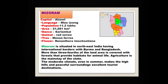Mizoram — capital Aizawl. Mizoram is situated in northeast India having international borders with Burma and Bangladesh. More than three-fourths of the land area is covered with forests that provide habitats for animal life. Agriculture is the mainstay of the state. The moderate climate, even in summer, makes the high hills and peaceful surroundings excellent tourist destinations.